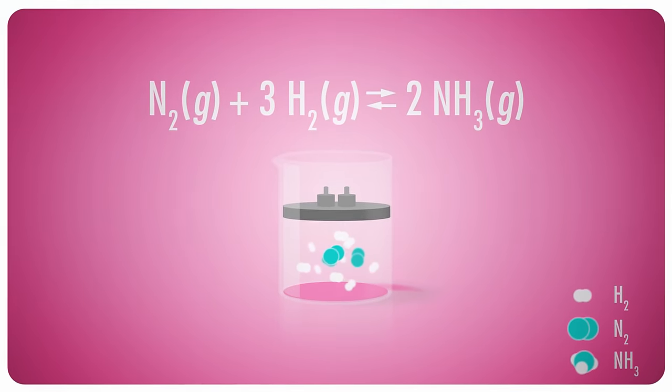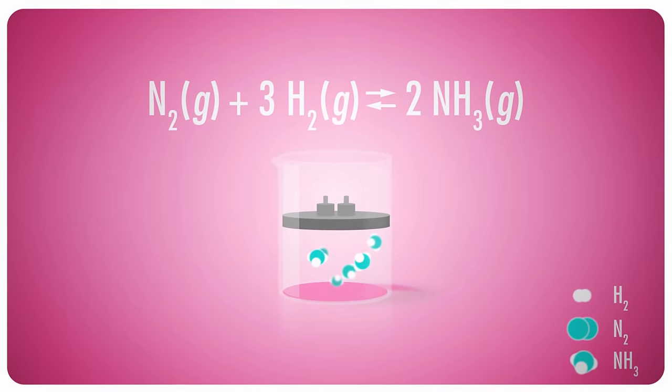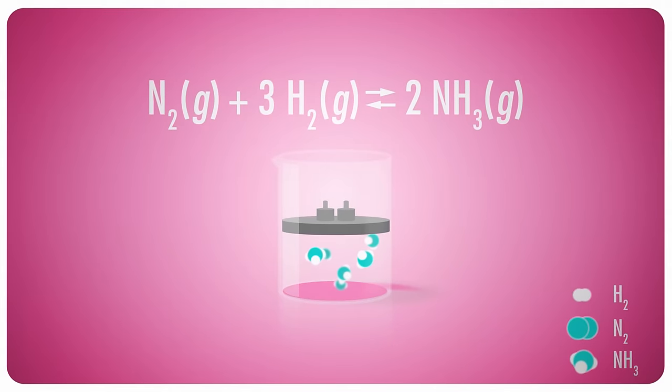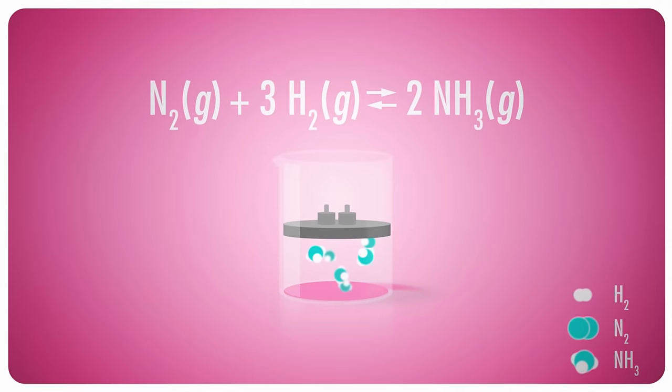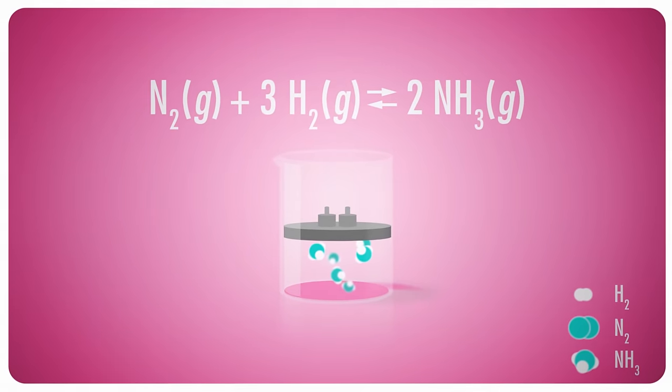For example, adding pressure to the Haber process that we use to create ammonia essentially shifts the position of equilibrium so the result of the reaction is more ammonia being produced than nitrogen and hydrogen. But wouldn't it be a lot more helpful if you knew how much pressure you'd have to add to produce the exact amount of ammonia you needed, or how much hydrogen fluoride it takes to refine a certain volume of gasoline? Math, of course, is the way to answer questions like these.